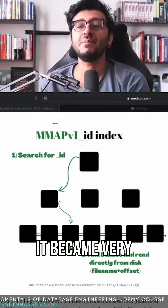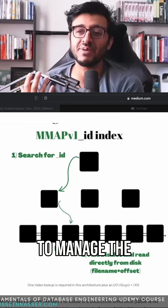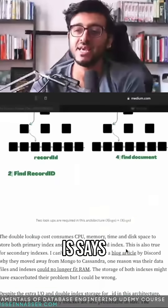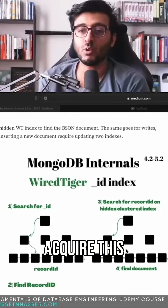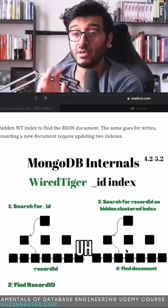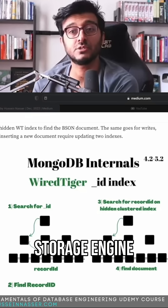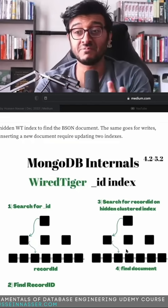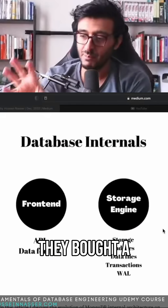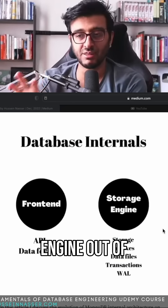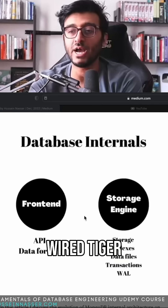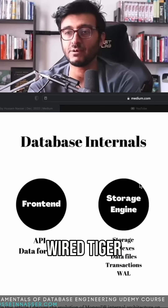It became very challenging to manage this storage engine, so what MongoDB did was acquire the WiredTiger storage engine — a very popular and efficient storage engine. They scrapped the old one and adopted WiredTiger out of the box as the new default.